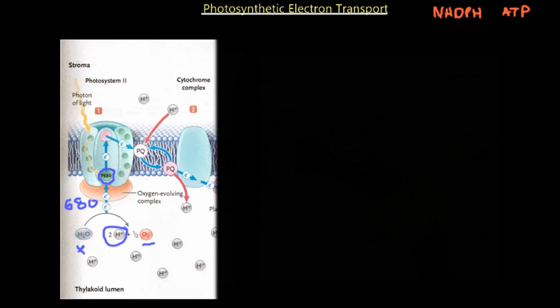It's important to keep in mind that we are building a proton motive force on the thylakoid lumen side of the membrane. There's going to be an increasingly positive charge there because we are adding protons from the hydrolysis of water, and there are other mechanisms where protons are also being added to the lumen.